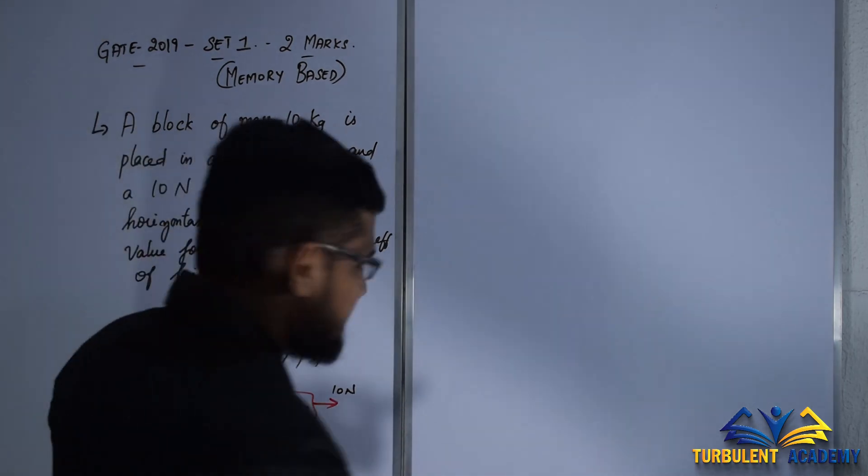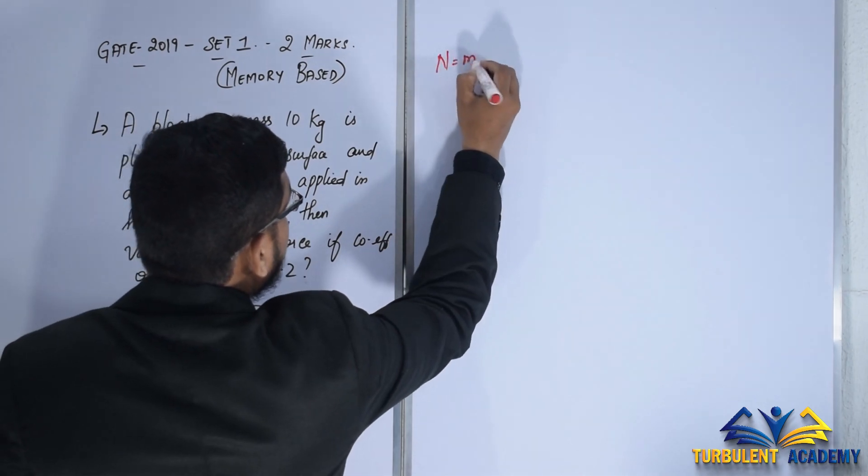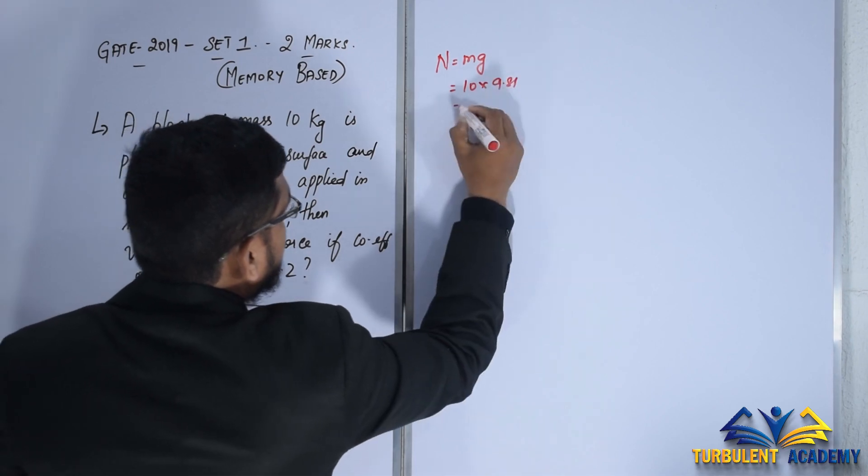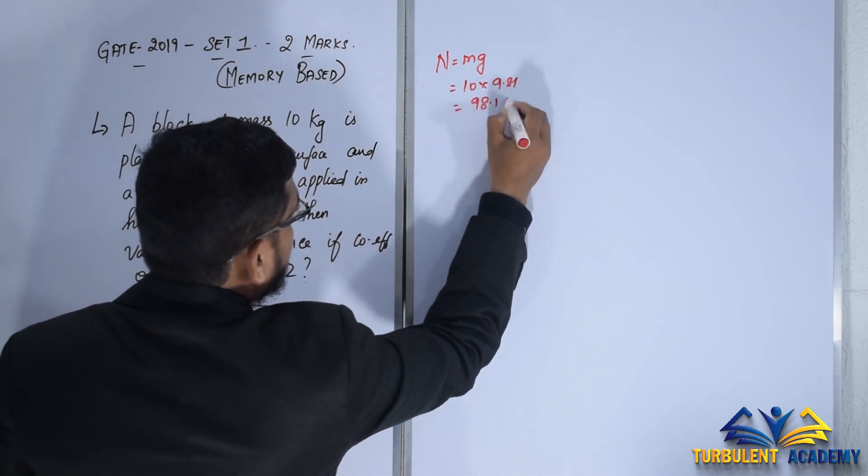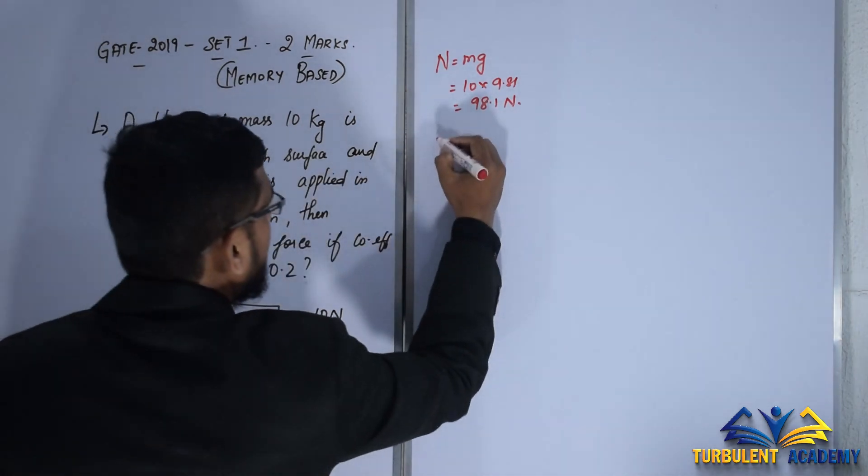Just solve it as such. N is mg, so m is 10, g is 9.81, which gives us 98.1 newton. So this is the normal force.